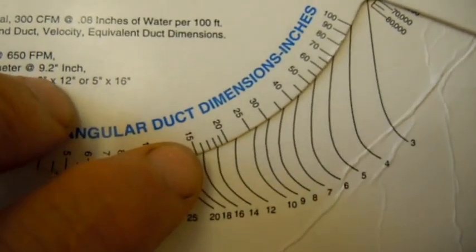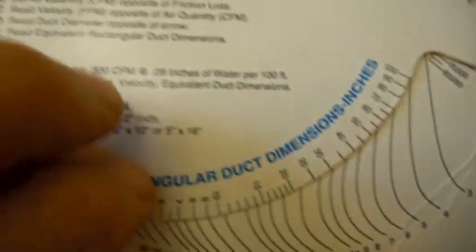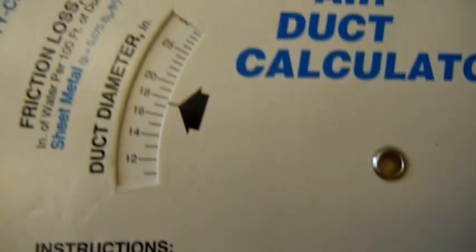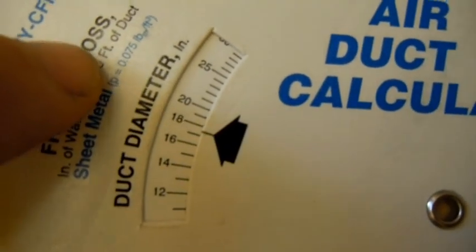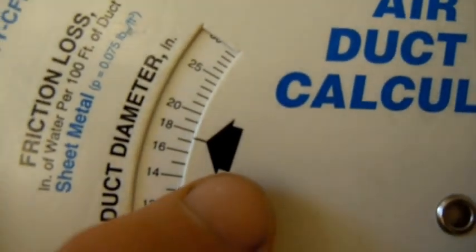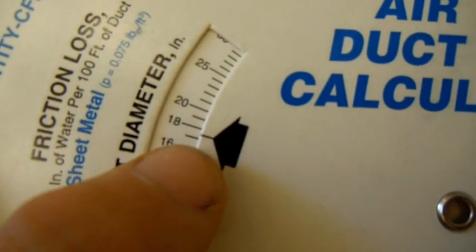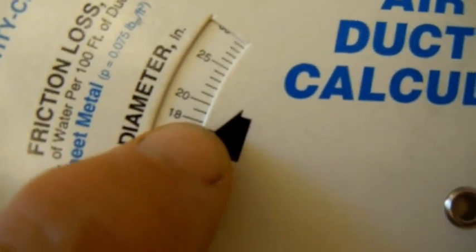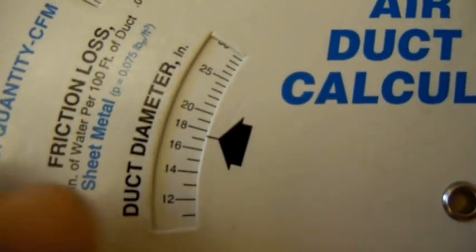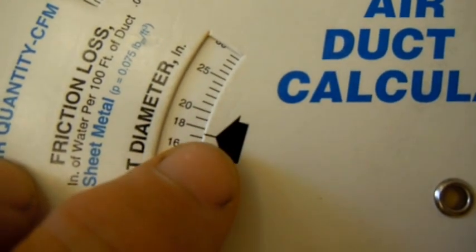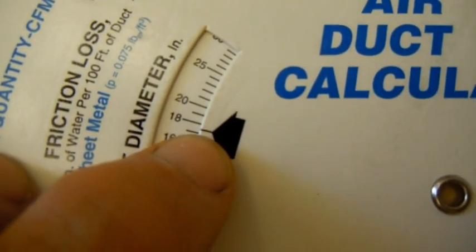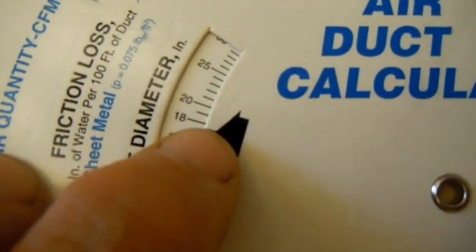So you see that will line up to the equivalent of the round duct to about a little over 17. So really you've got to go to 18 inches. So that means that the same amount of duct space inside diameter is going to be about 18 inches.